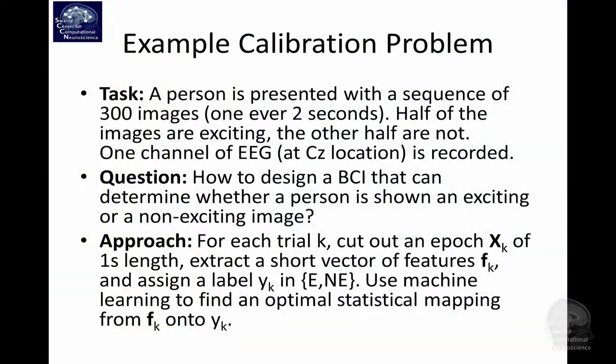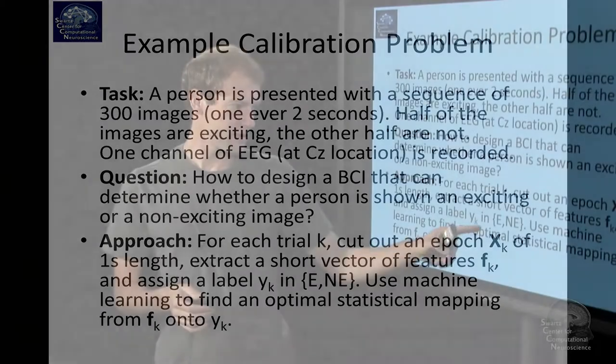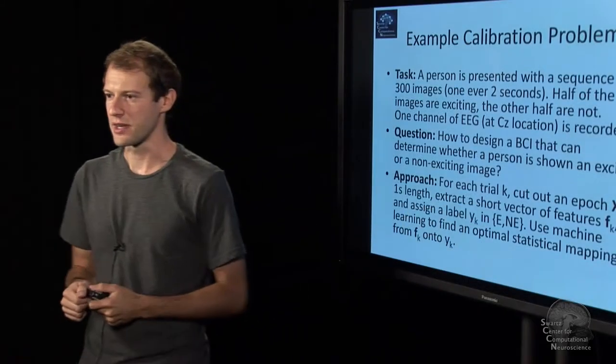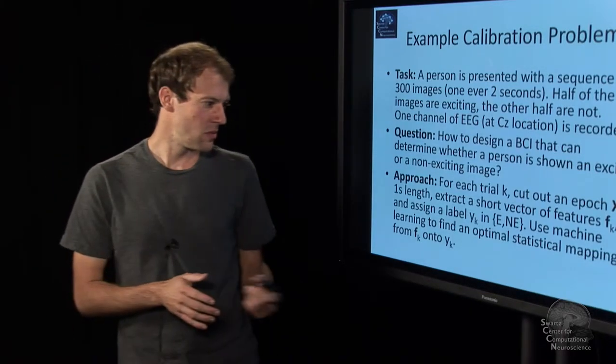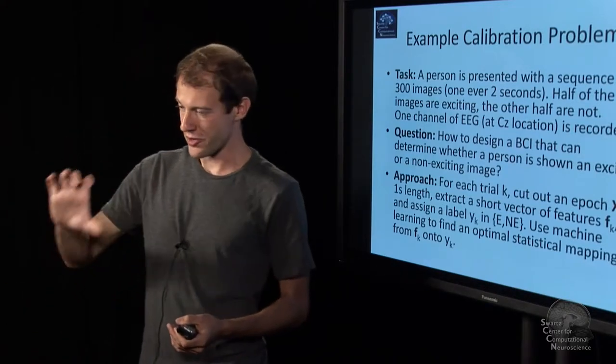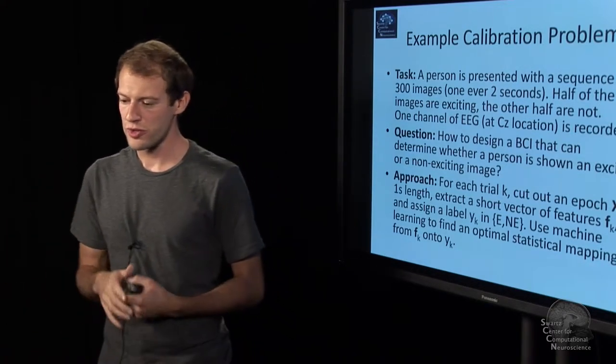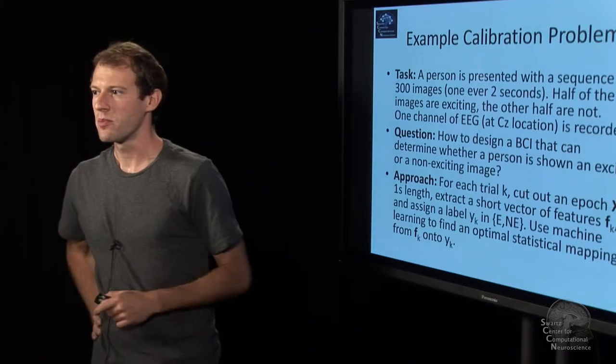What we do now is, we're taking each of these 300 trials, we cut out a chunk of EEG around that of about a second, and we are extracting a short feature vector that characterizes the EEG in a compact manner. We're assigning a label, either E for excited or NE for non-excited. Then we're using machine learning to find a statistical mapping from a feature vector onto the output and onto the label.